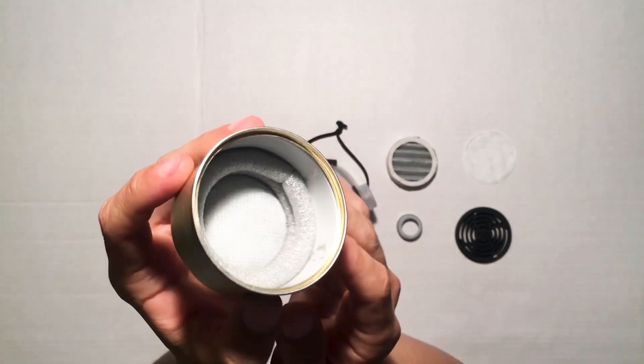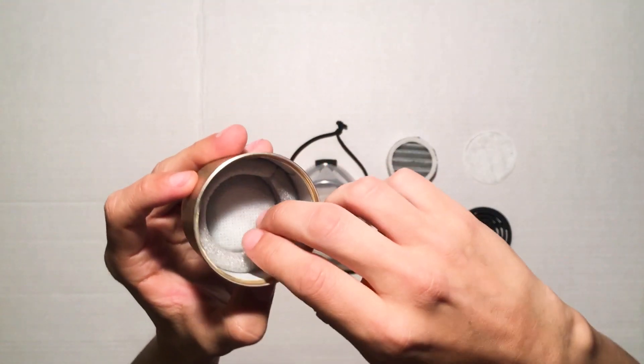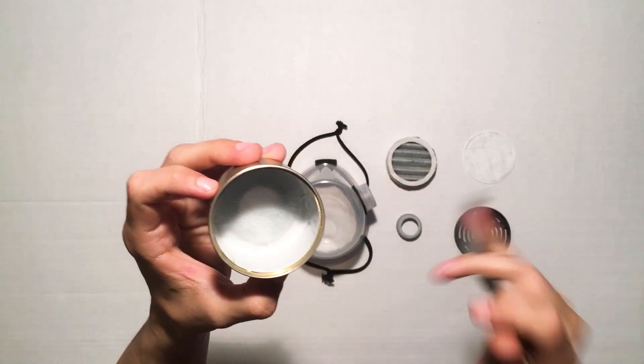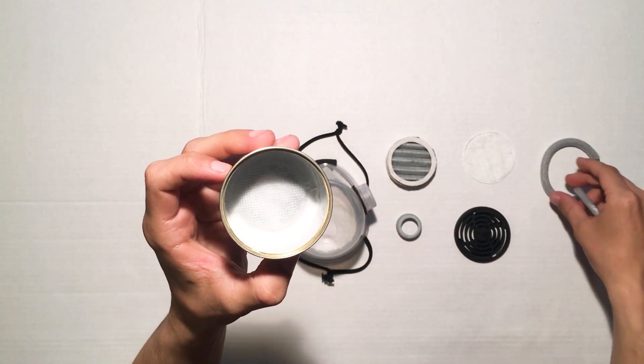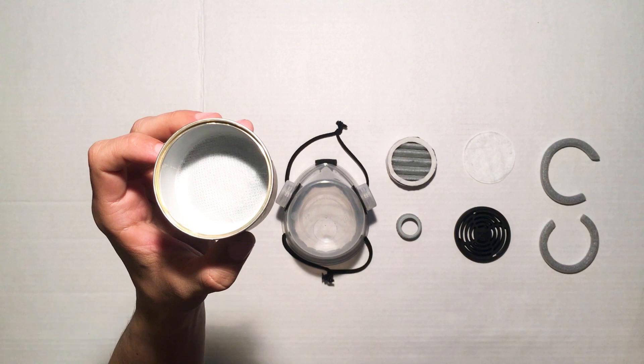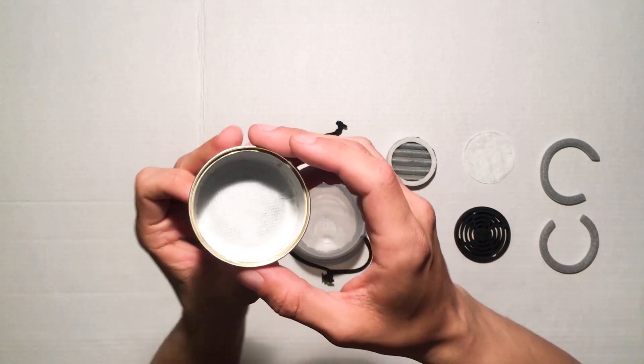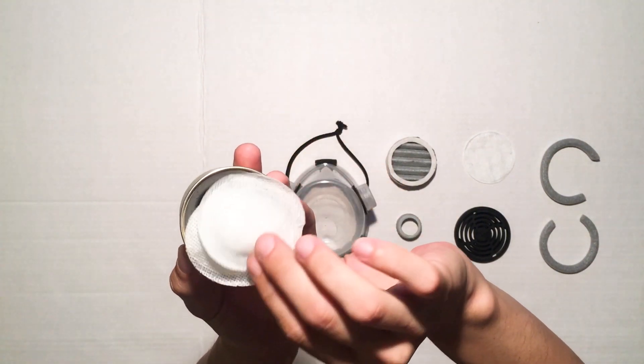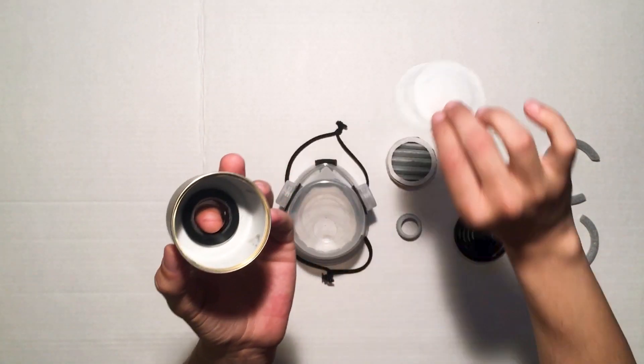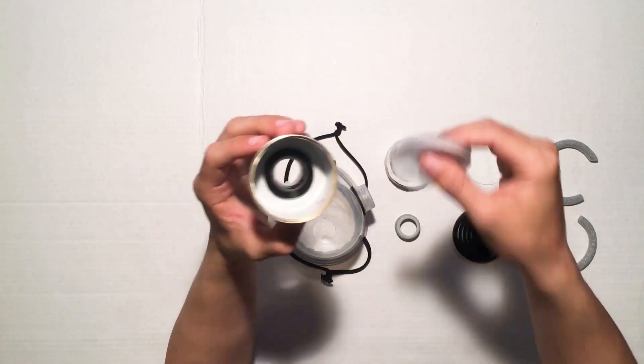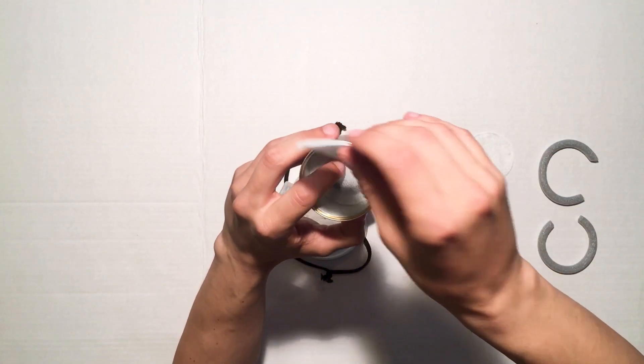A couple of foam spacers that form a chamber to improve the air flow. And below that, two layers of pre-filter material from the same vacuum cleaner bag. Let's pop that back together.